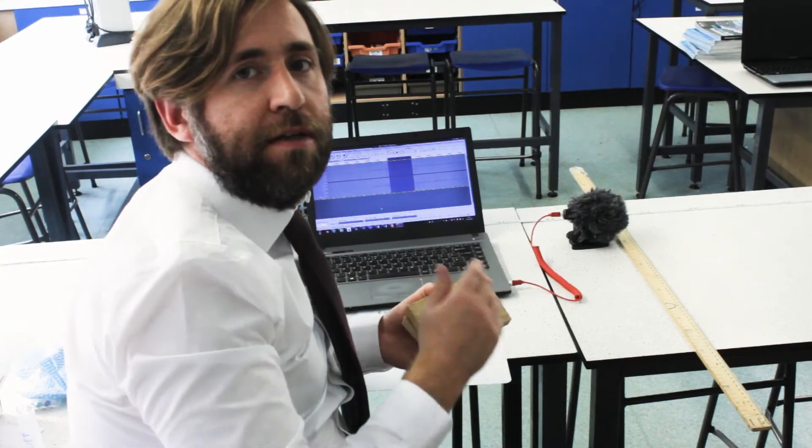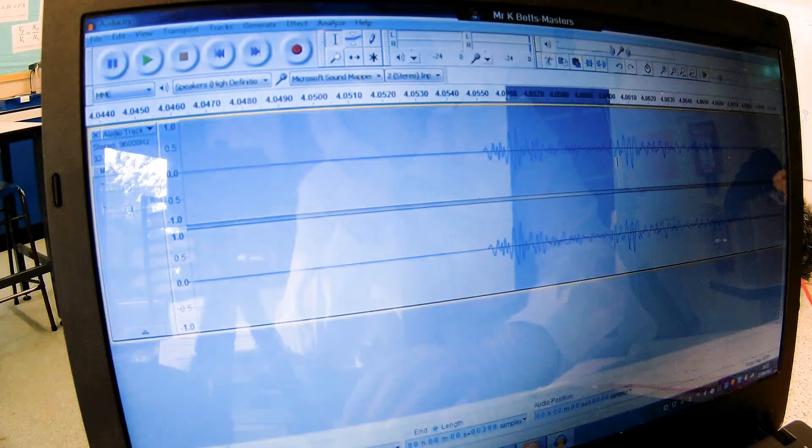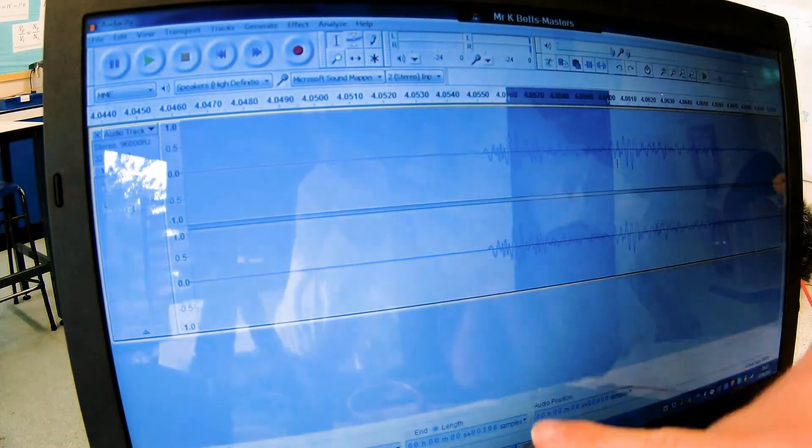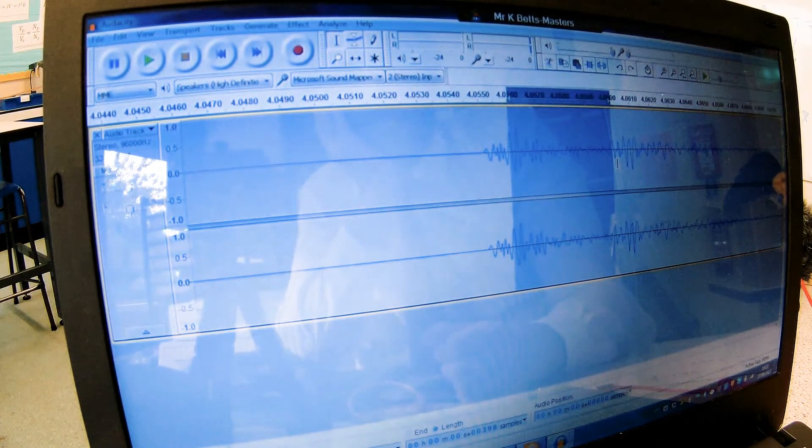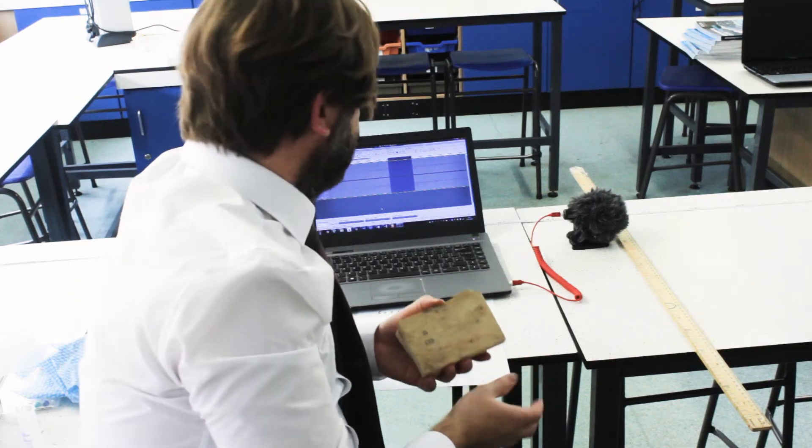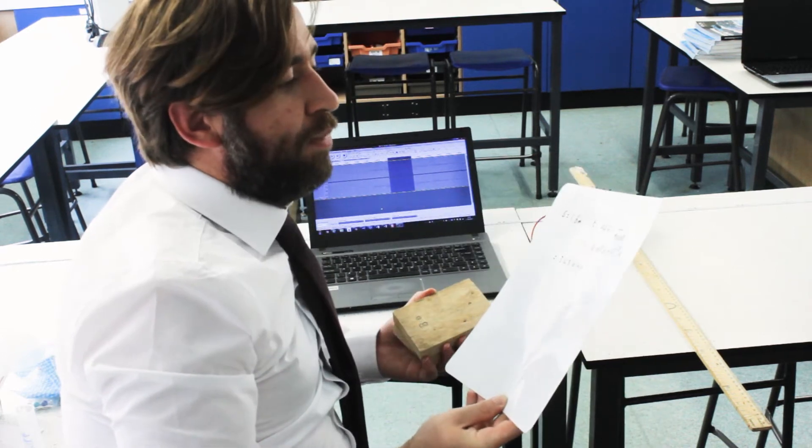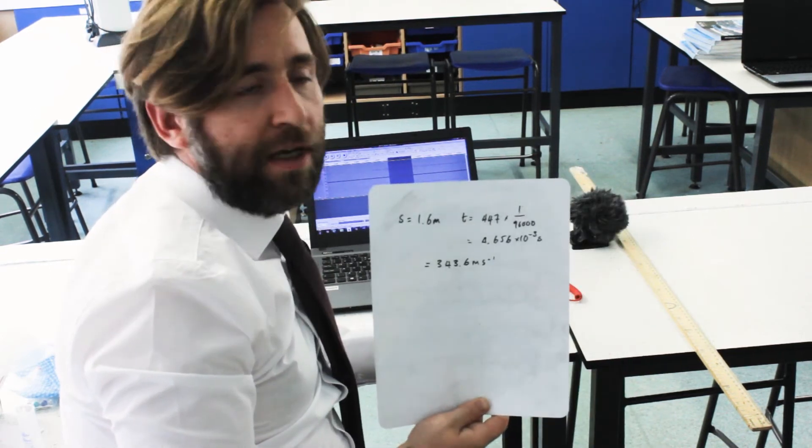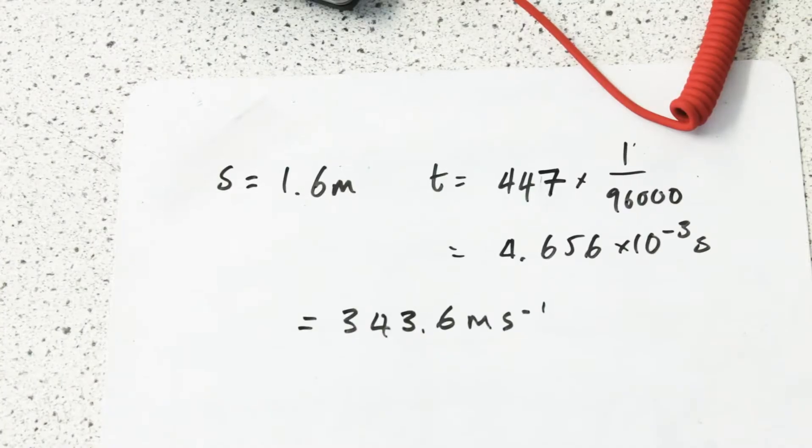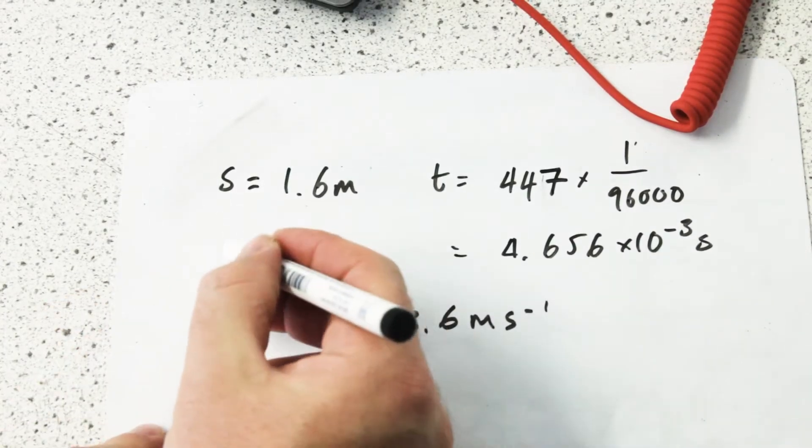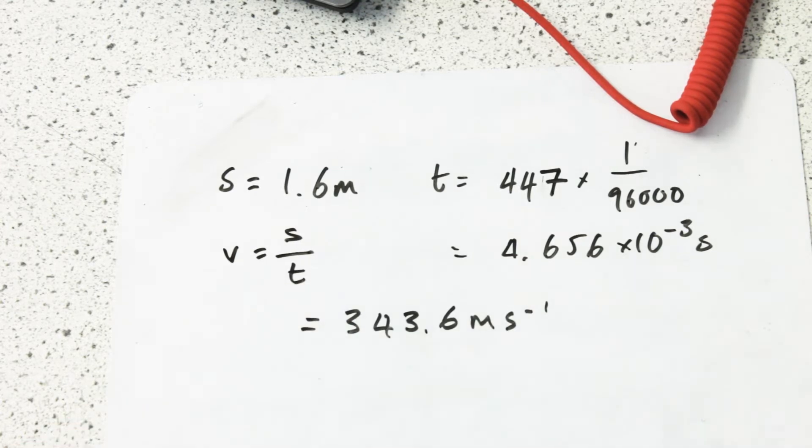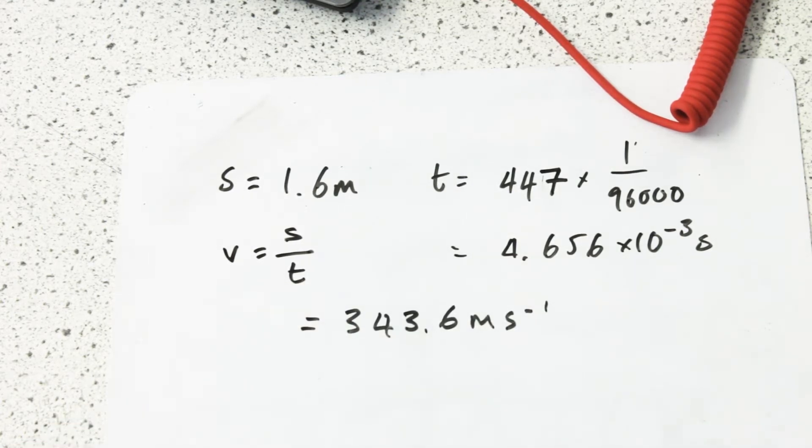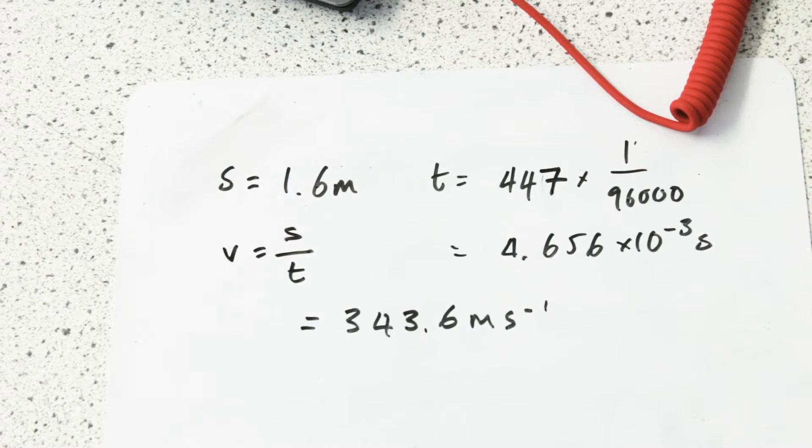I've measured the time in numbers of samples and it's sampling at 96,000 hertz, so that's giving me a time base of 1 over 96,000. It was 447 samples times 1 over 96,000, which gives me the time being 4.656 times 10 to the minus 3 seconds. Then the speed distance over time is 1.6 over that value, which gives me that result.